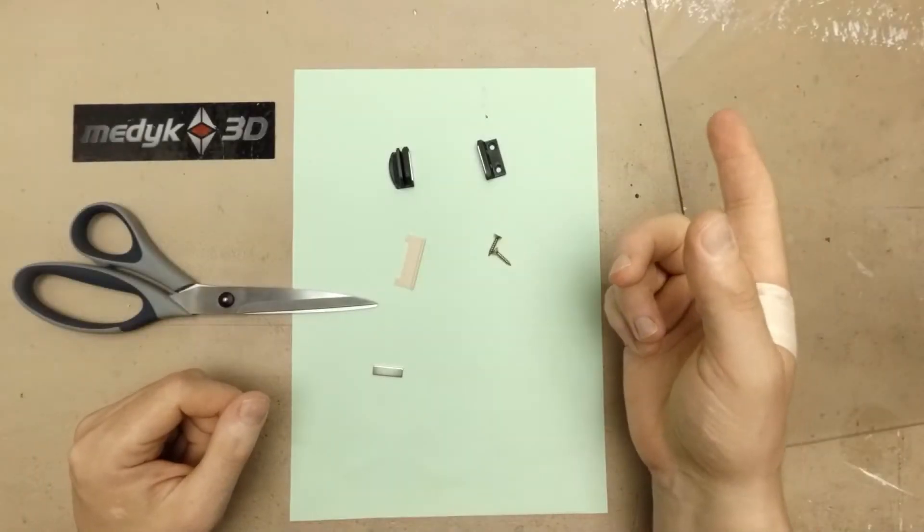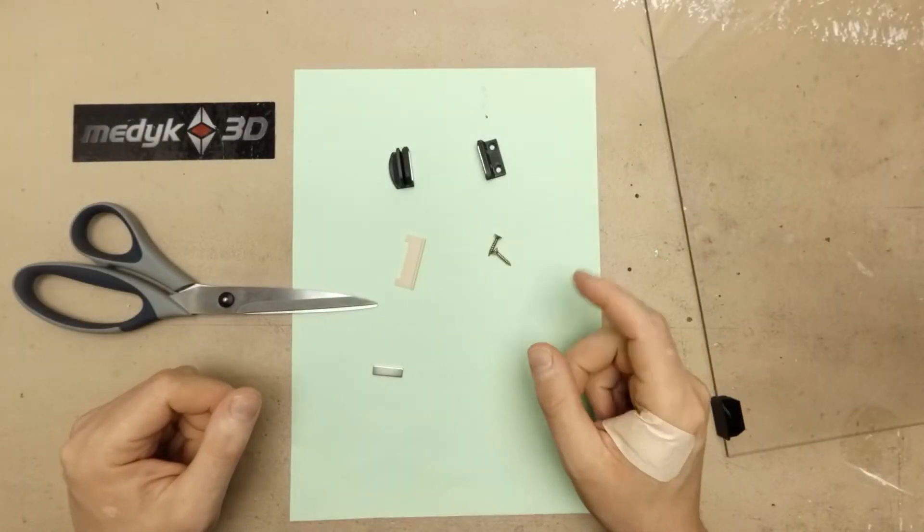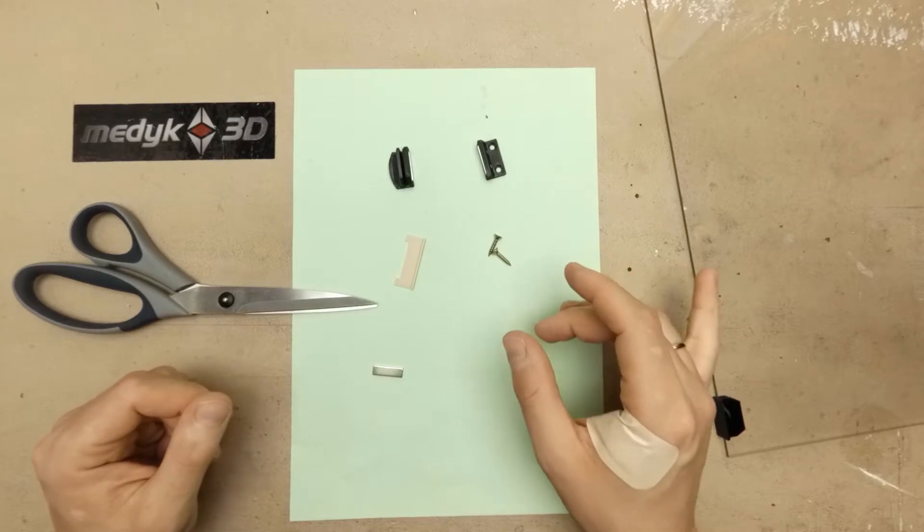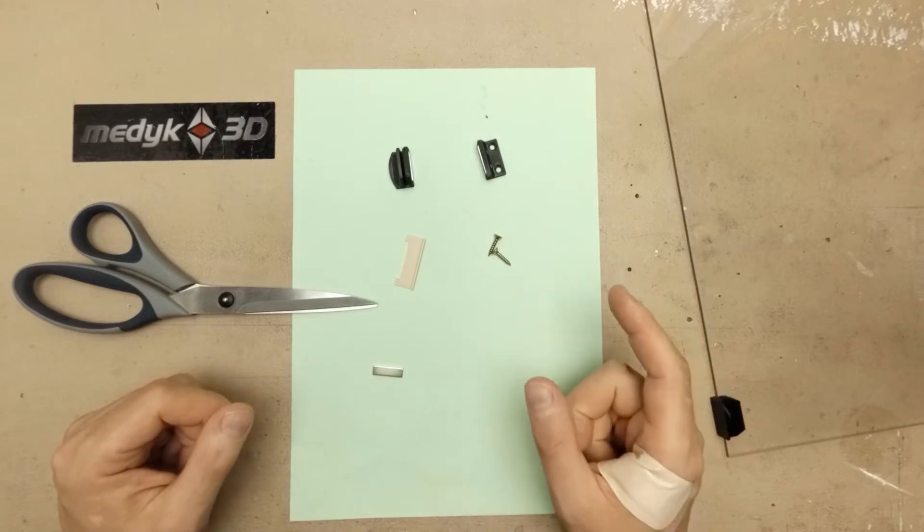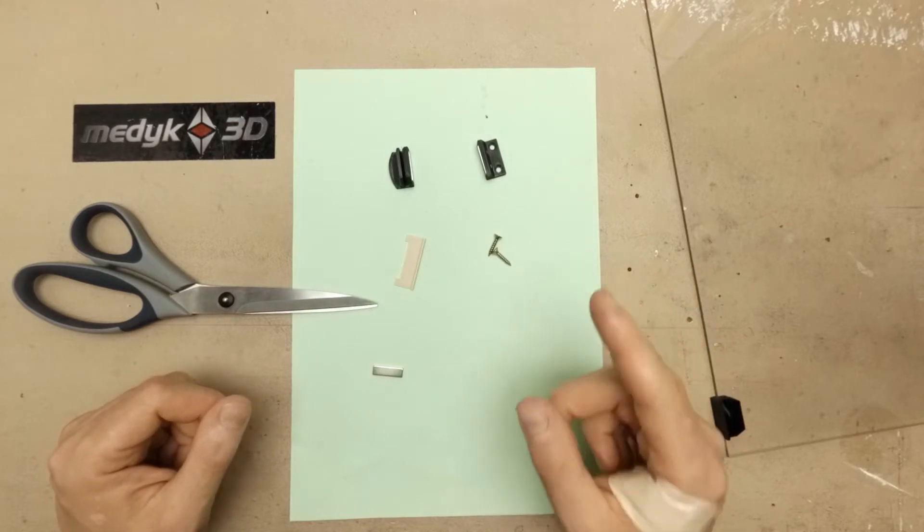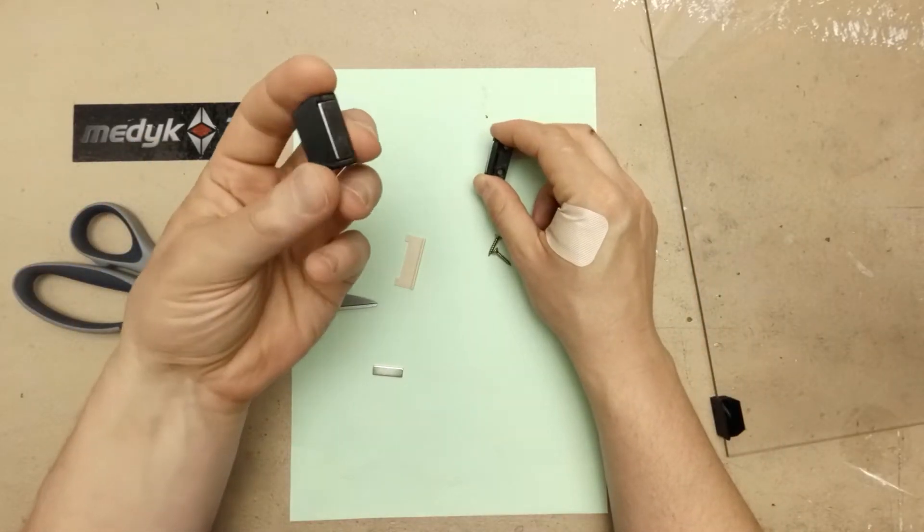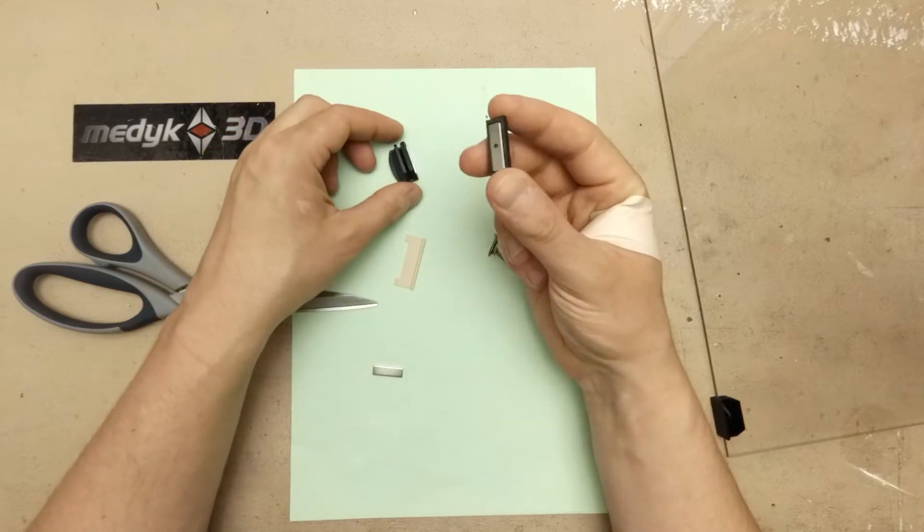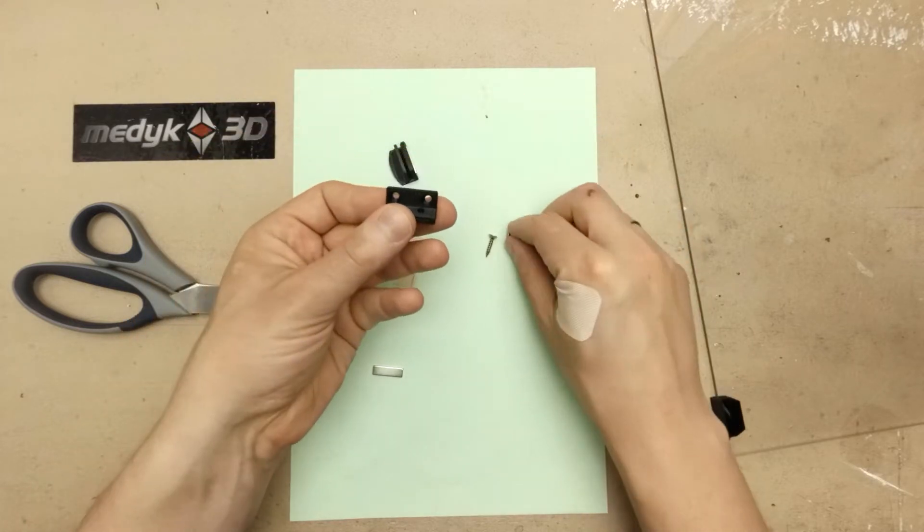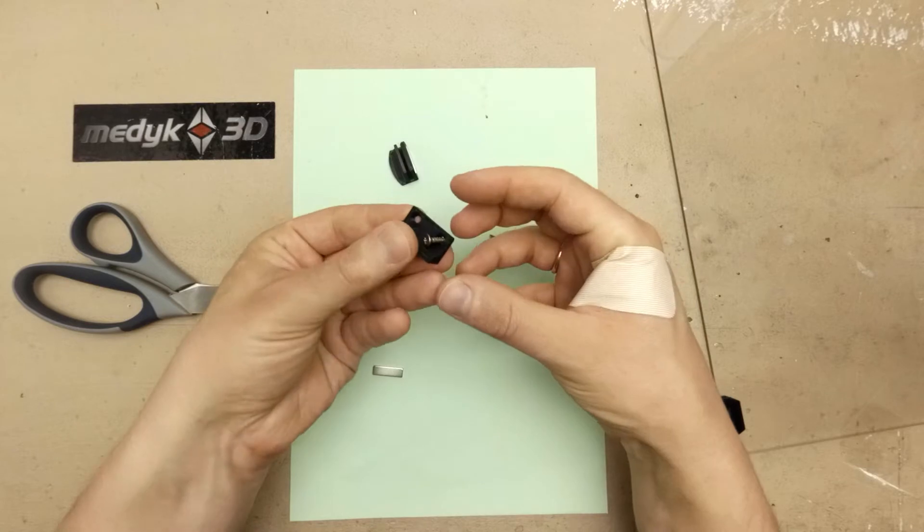As you can see on my last video about upgrading the Prusa enclosure, I was trying to make the side panels easily detachable, but it was not the best design. So I've decided to upgrade it. I've designed these two clips - this one is designed to go on the side panel plexi, and this one is going to be screwed to the table itself using some small wood screws.